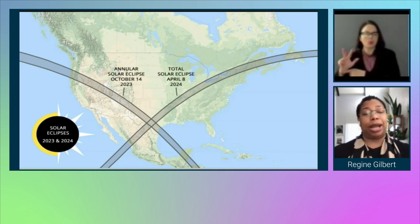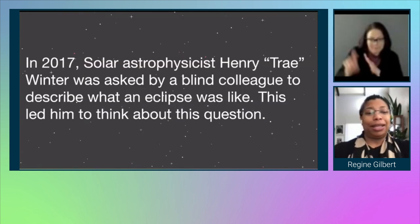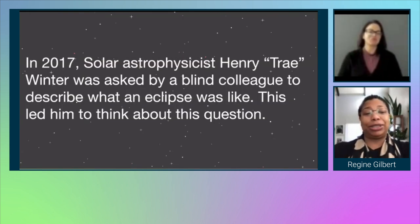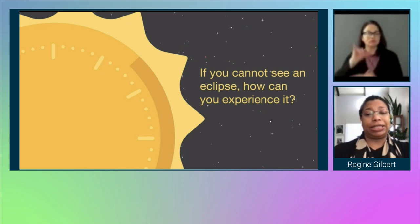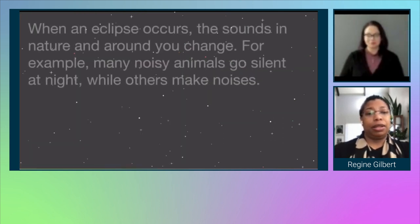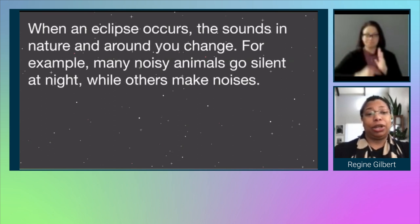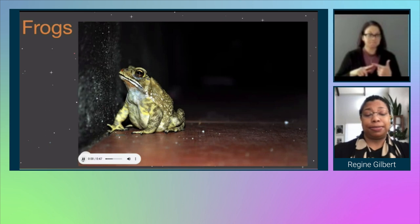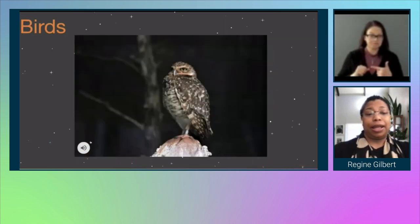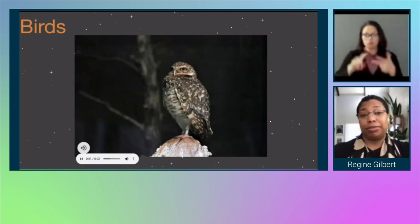In 2017, solar astrophysicist Henry Trey Winter was asked by a blind colleague to describe what an eclipse was like. This led him to think about this question: if you cannot see an eclipse, how can you experience it? When an eclipse occurs, the sounds in nature and around you change. For example, many noisy animals go silent while others make noise — there are crickets, frogs, birds such as owls, and other birds may go silent.